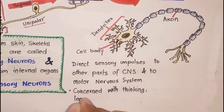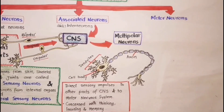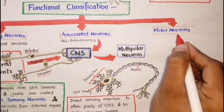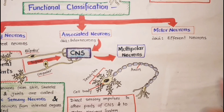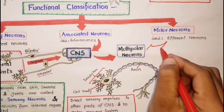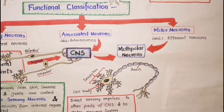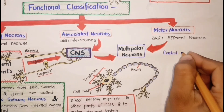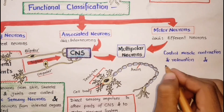Some interneurons in the brain are concerned with thinking, learning, and memory. Motor neurons, also known as efferent neurons, are generally multipolar. They conduct impulses out of the brain or spinal cord to effectors; motor impulses control muscle contraction and relaxation, and also the secretions of glands.